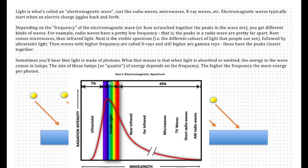Depending on the frequency of the electromagnetic wave, or how scrunched together the peaks and troughs are, you get different kinds of waves. For example radio waves, they have a pretty low frequency. Next comes microwaves, then infrared light.